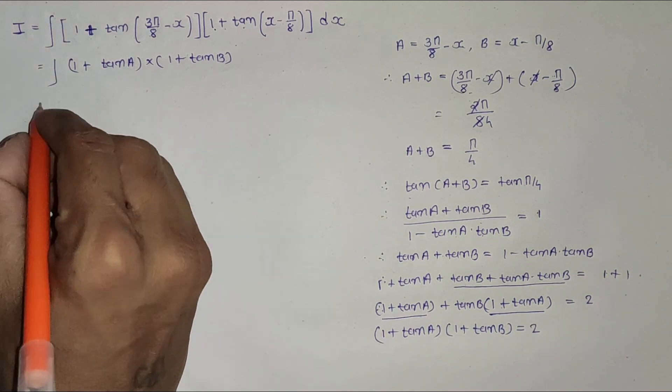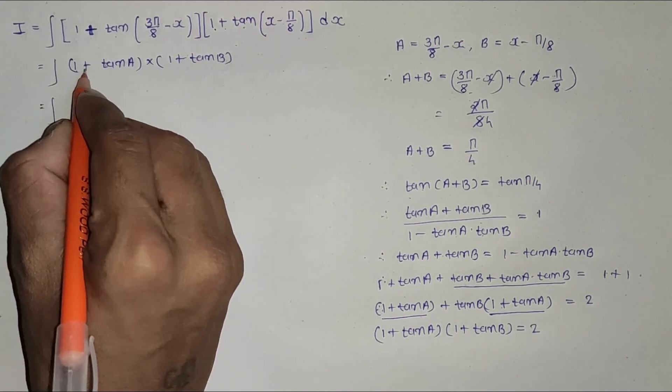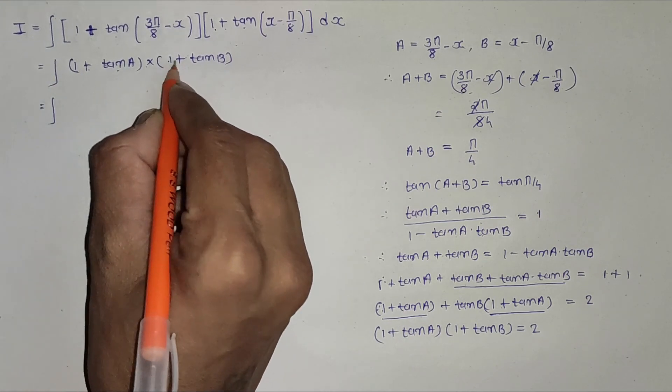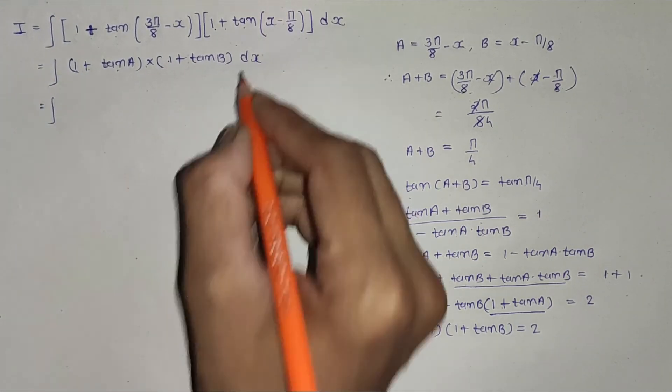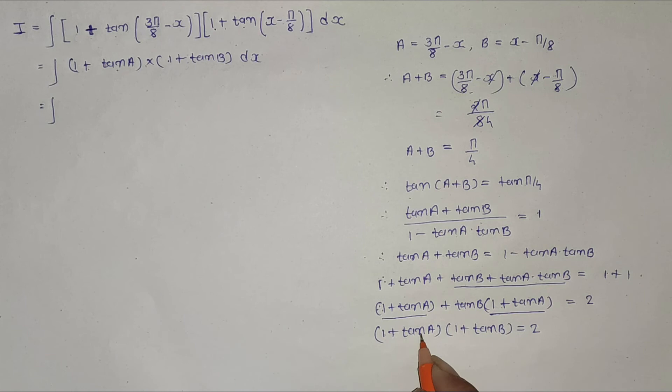Now look here, the integration is (1 + tan a) multiply (1 + tan b) dx, and I have (1 + tan a)(1 + tan b) equals 2.